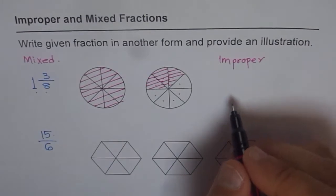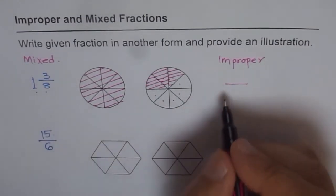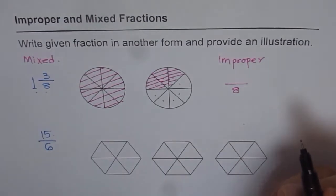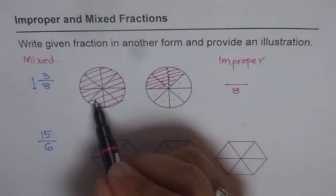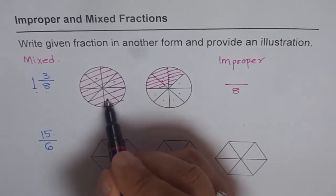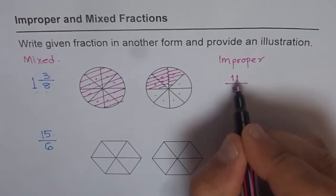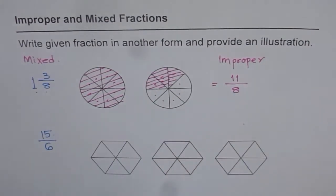Improper means numerator is higher than denominator. Denominator will be how much for us? 8ths. It always remains same. Numerator is add them all. So we will start from here. 1, 2, 3, 4, 5, 6, 7, 8, 9, 10, 11. So we get 11 out of 8. So that is our answer. That's how we will be doing it.